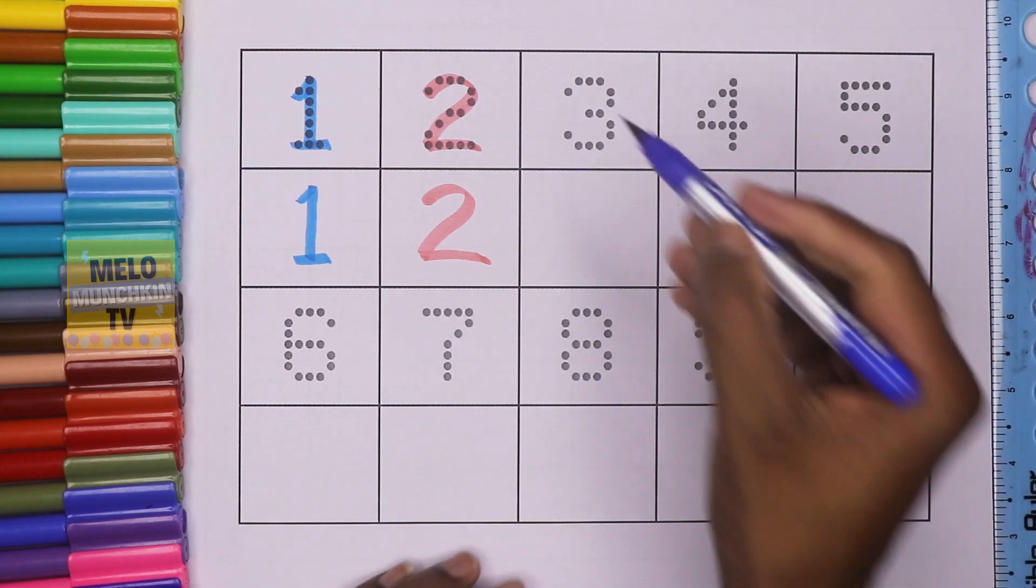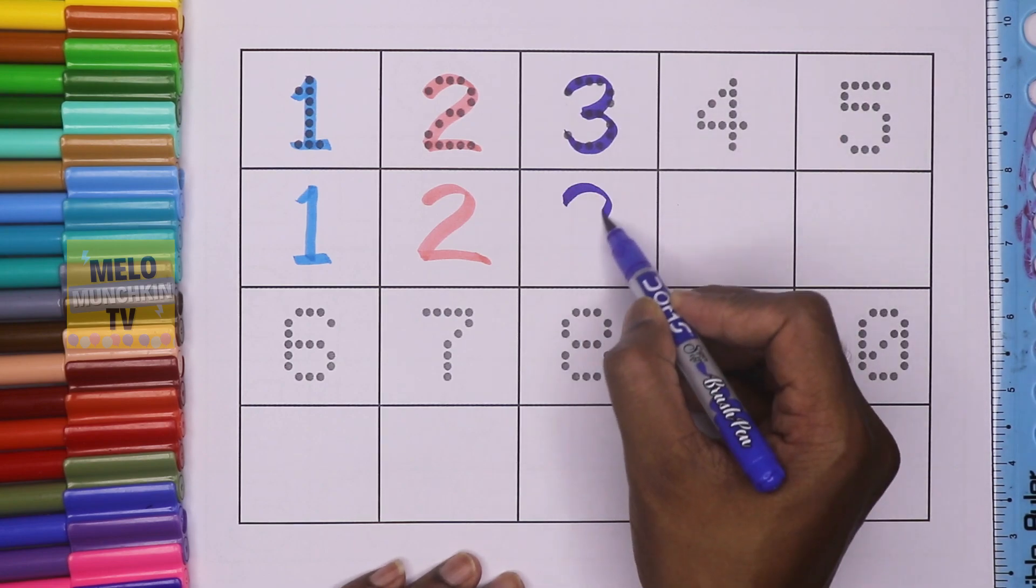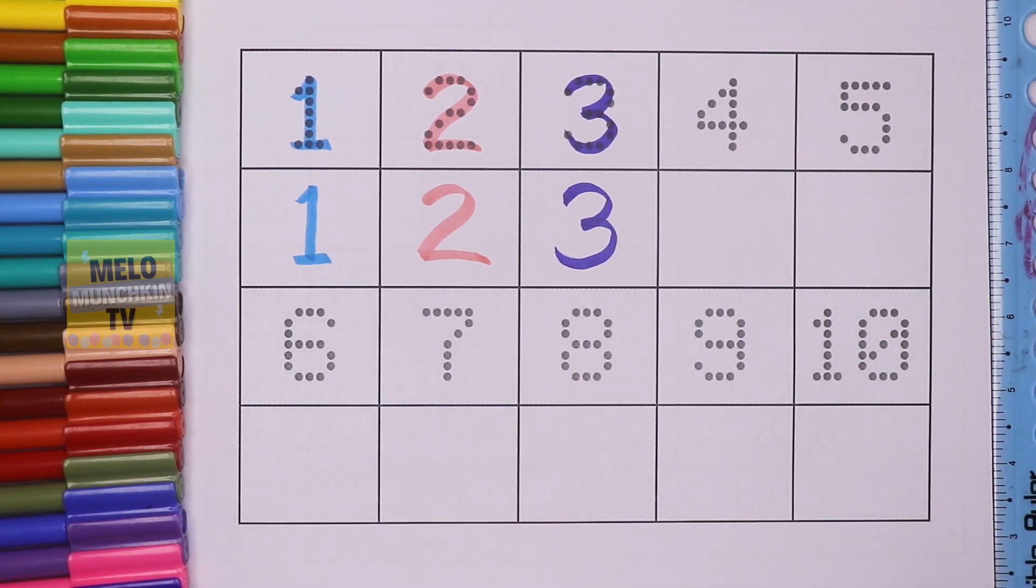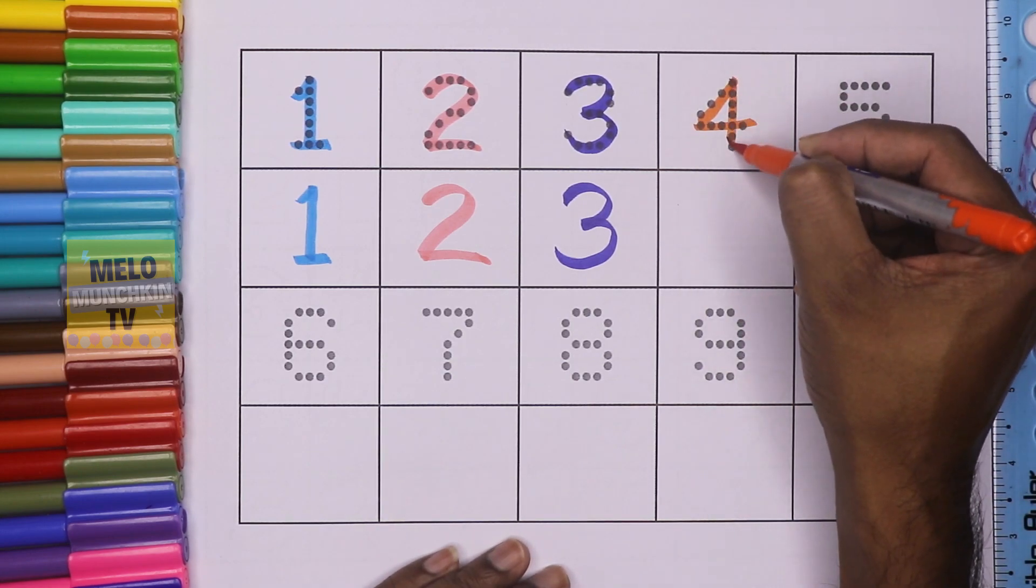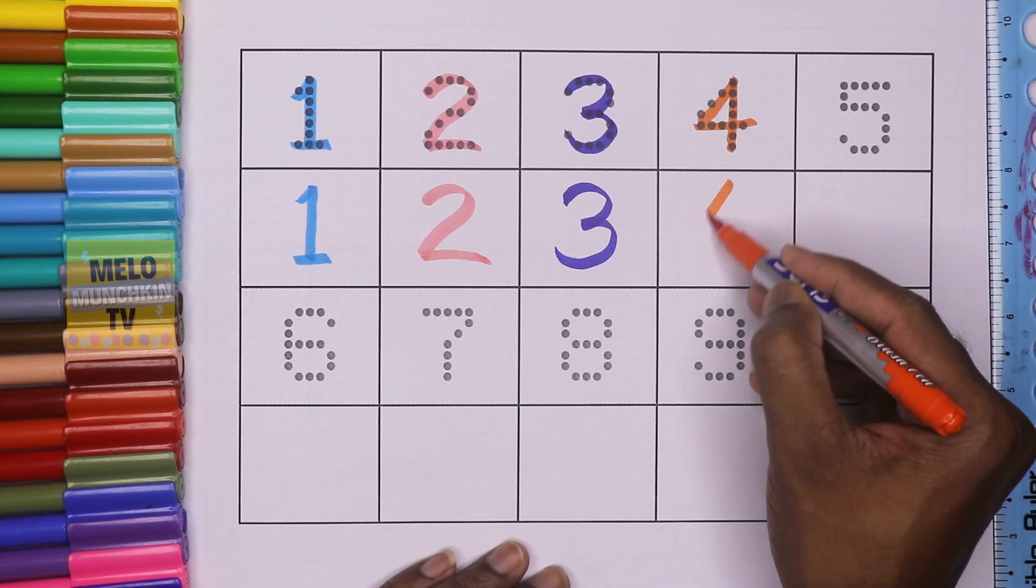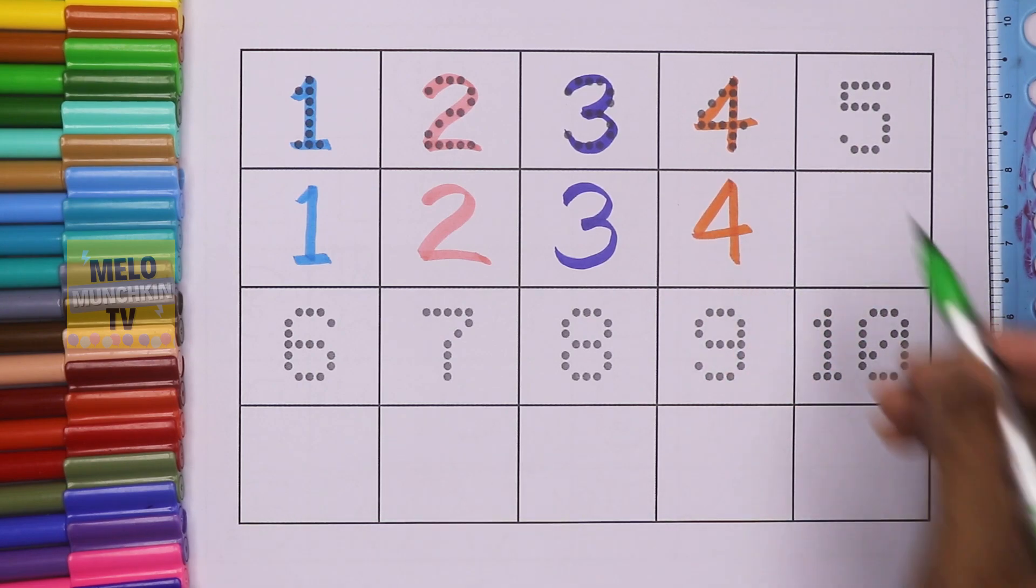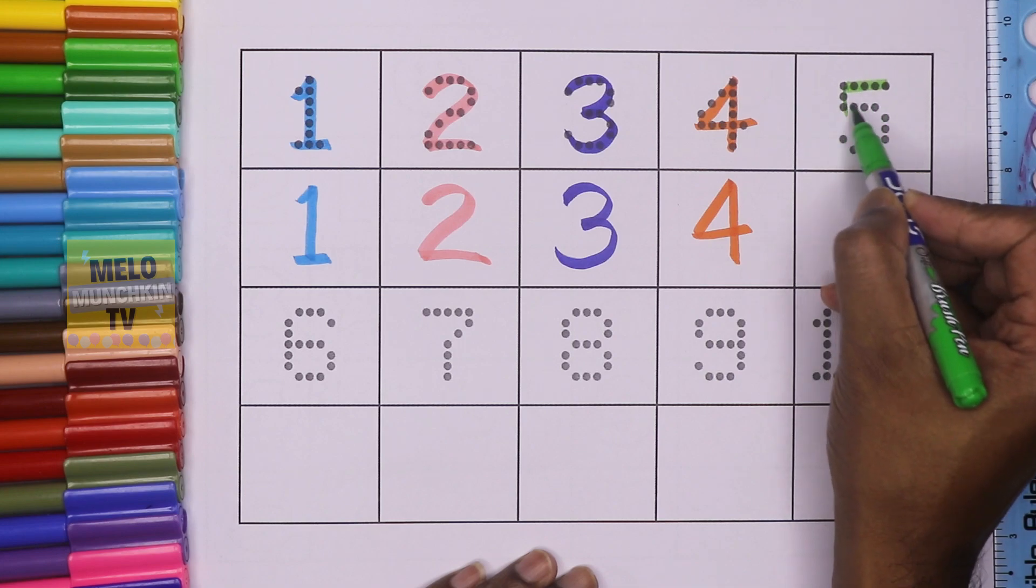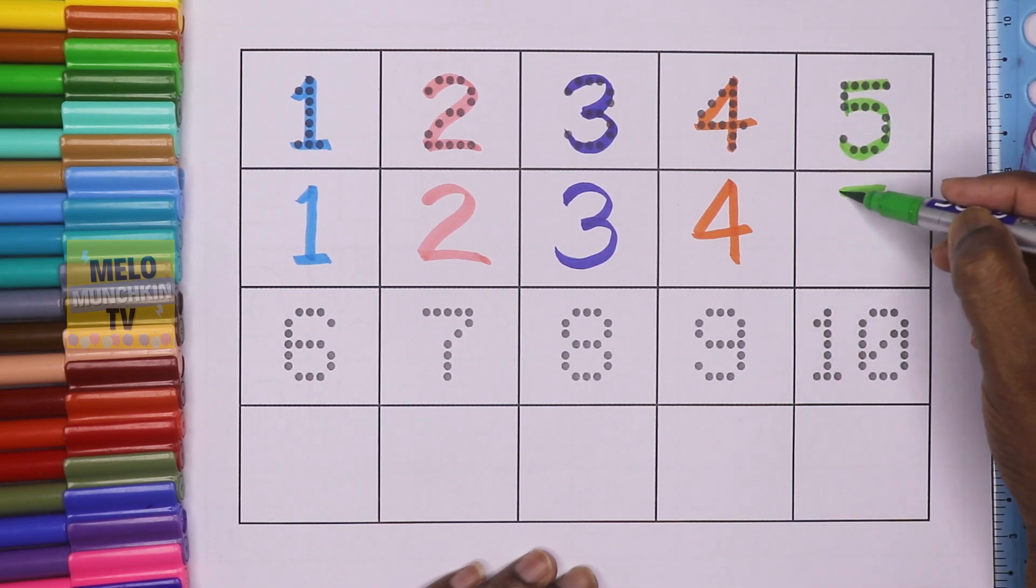This is number three: T-H-R-E-E, three. T-H-R-E-E, three. This is number four: F-O-U-R, four. F-O-U-R, four. This is number five: F-I-V-E, five. F-I-V-E, five.